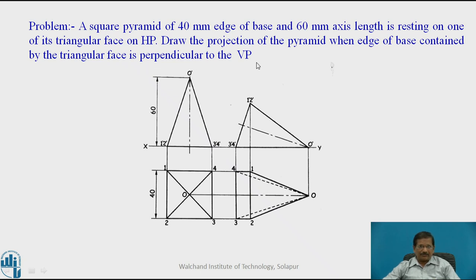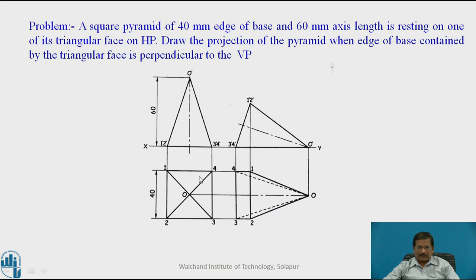As it is resting on its base on HP, the top view will be a square and the front view will be a triangle. For the pyramid, you join O1, O2, O3, and O4 as the generators are visible. The triangular faces are 1, 2, 3, and 4. You tilt the triangular front view such that face O-3-4 rests on the XY line — meaning the triangular face rests on HP. Redraw this triangle and project it downwards.